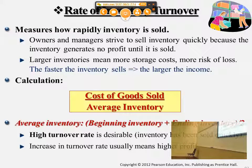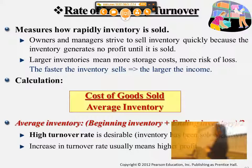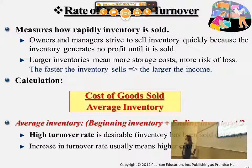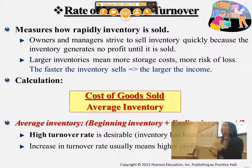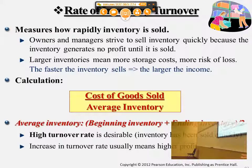Average inventory represents the part not yet sold to customers, while the numerator — cost of goods sold — represents what has been sold. This ratio tells you how many times cost of goods sold exceeds average inventory. Average inventory is calculated as beginning inventory plus ending inventory divided by two, giving an average level of inventory in the warehouse. The higher this ratio, the better, because a higher ratio means the company is turning inventory into cost of goods sold — and ultimately profit — very quickly.